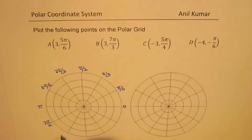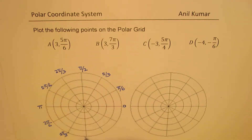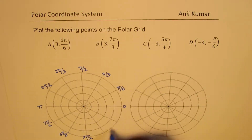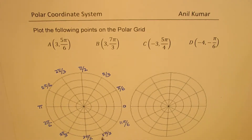Continuing around: 6π/6 is π, then 7π/6, 8π/6 which simplifies to 4π/3, then 9π/6 which is 3π/2, then 10π/6 which is 5π/3, and finally 11π/6 before returning to 2π.